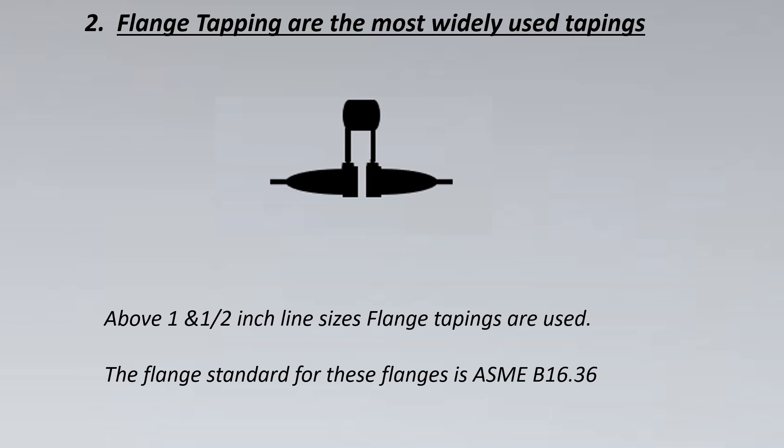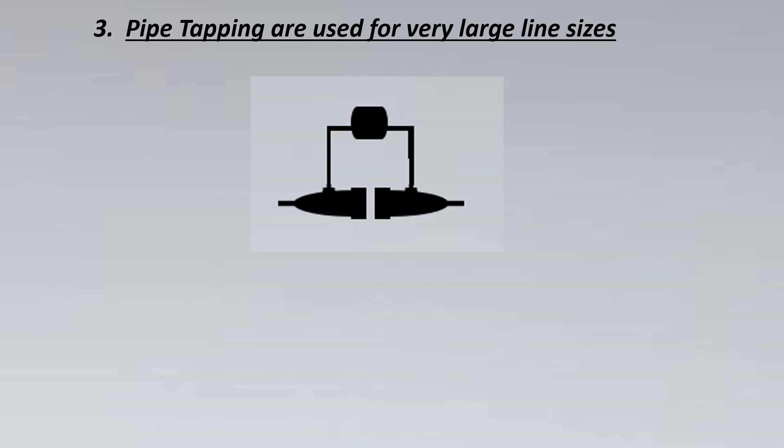This is the flange standard that we use for orifice flanges, and not ASME B16.5 or B16.47. Now let us look into the third type of tapping which is pipe tappings. These are specially used for very large line sizes. Why? Because the restriction that is created for such line sizes, the vena contracta is very far away from the DP device, so for that case we need to measure that DP at a longer distance from the restriction.